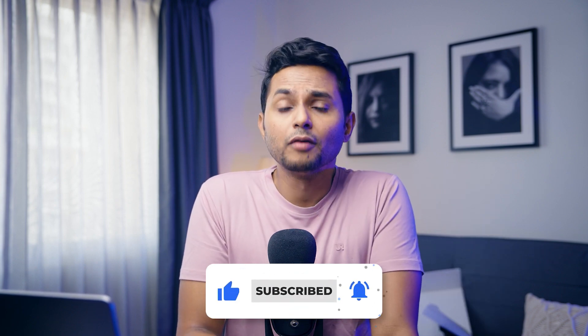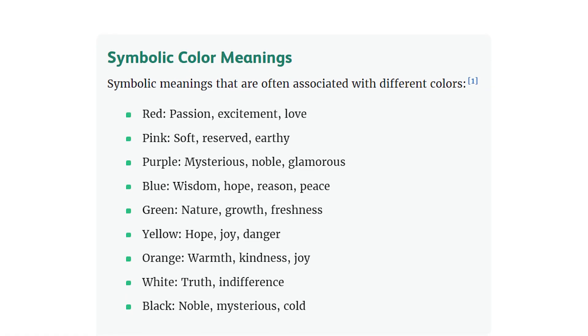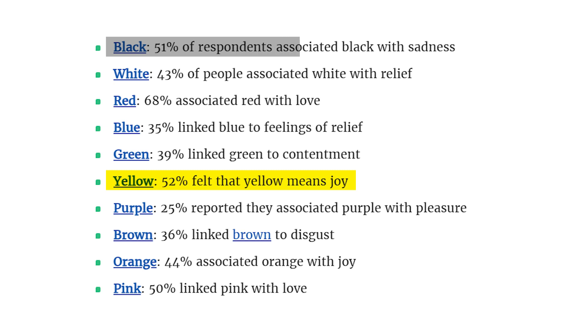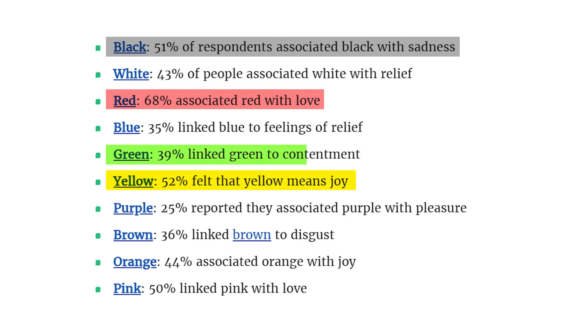As discussed at the beginning of the video, color has a huge impact on our decisions. A study surveyed a group of people from 30 different countries and found that people commonly associate certain colors with specific emotions. This research has some universal qualities — for example, yellow means joy, black is associated with sadness, red is associated with love, and green with commitment.